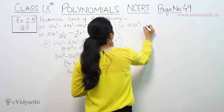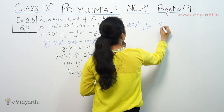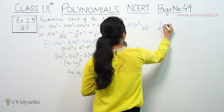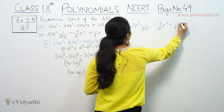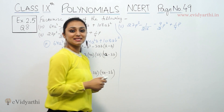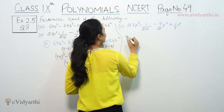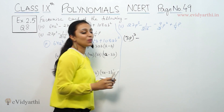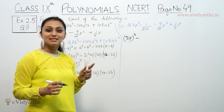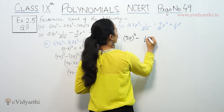For the next part, we have 27p³ minus 1/216, minus 9/2 p² plus 1/4. So 27p³ can be written as (3p)³. And 1/216 — since 6³ = 216 — that is (1/6)³.